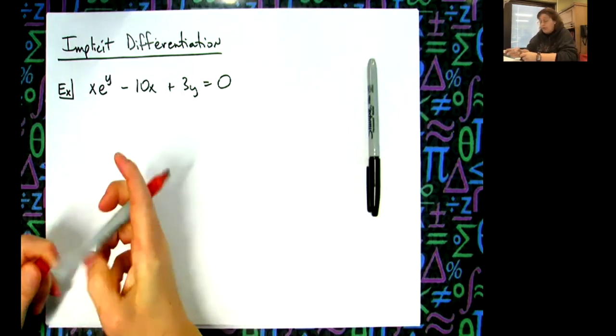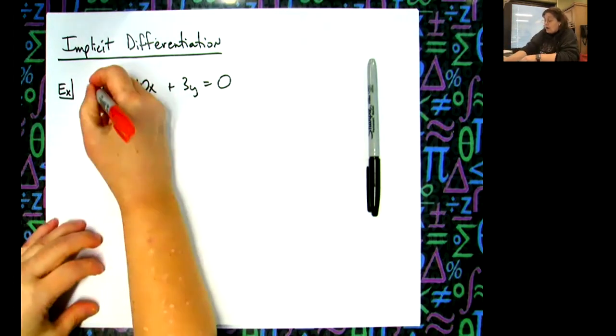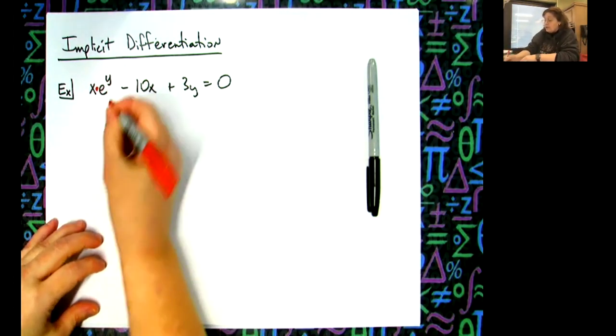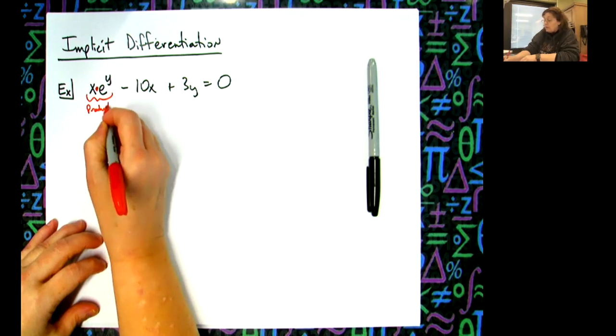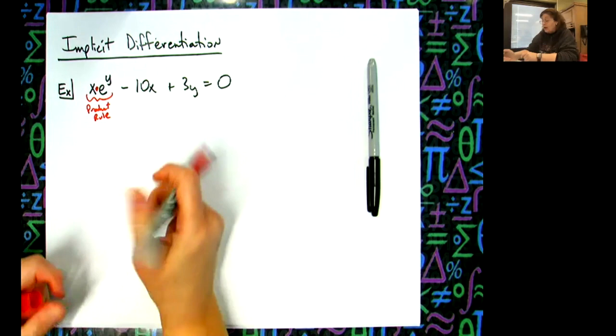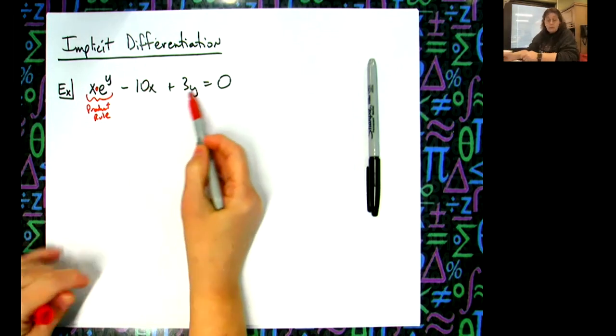So implicit differentiation, we've been doing this for a long time, but now we're just throwing that e function in there. Now you've got to recognize this as product. That's got to be product rule right there. I really think I've got everybody doing that now, you're not missing that.